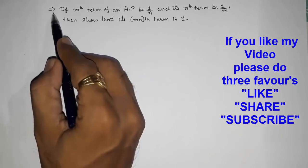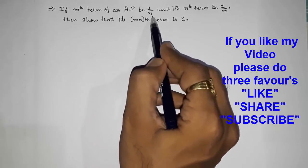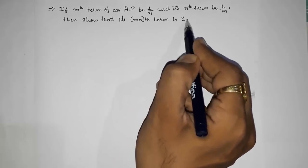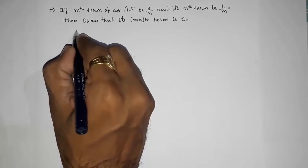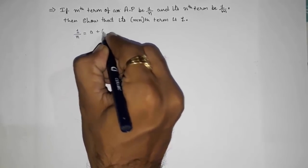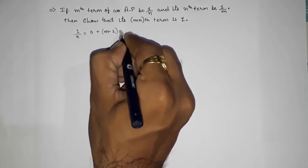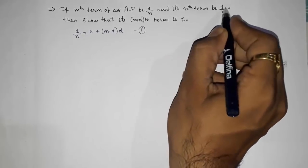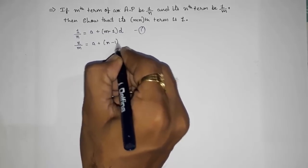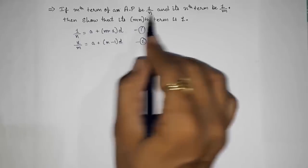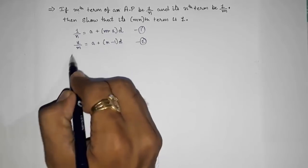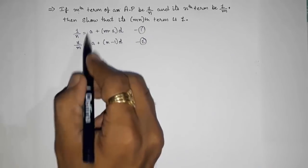Question number 3: If the Mth term of an AP is 1/N and its Nth term is 1/M, then show that its MNth term is 1. The Mth term is 1/N, so 1/N equals A plus (M minus 1)D — this is result number 1. The Nth term is 1/M, so 1/M equals A plus (N minus 1)D — result number 2. Now we want the MNth term, so we subtract equation 2 from equation 1.